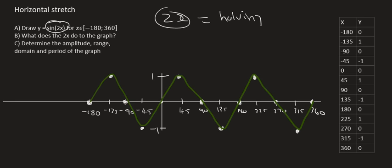Then it says determine the amplitude. Amplitude is always the maximum distance from your resting position. The resting position is this equilibrium line, the x-axis. That maximum distance is one. So your amplitude is one.